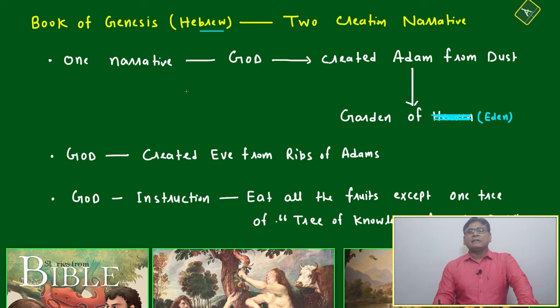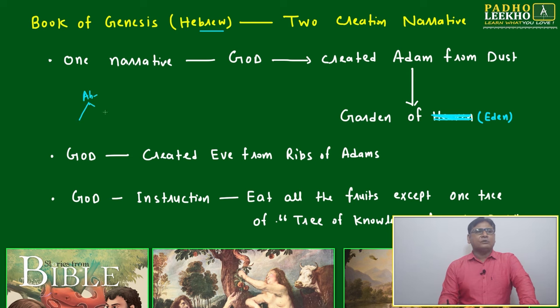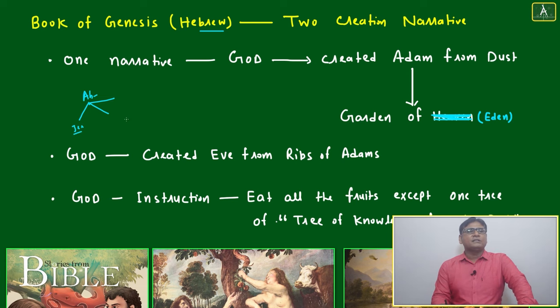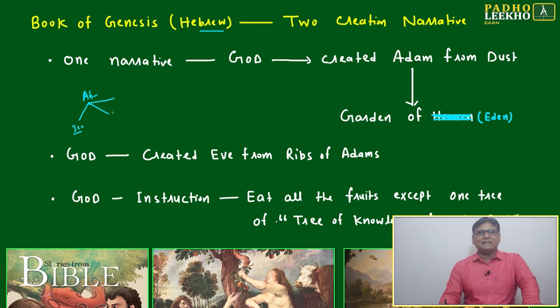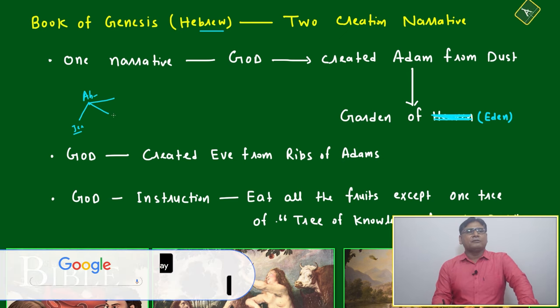Abrahamic religion - one Abraham was there, and this further divided into three religions. The original Abrahamic religion followers are Jews, mainly concentrated in Israel. They are following Abraham.